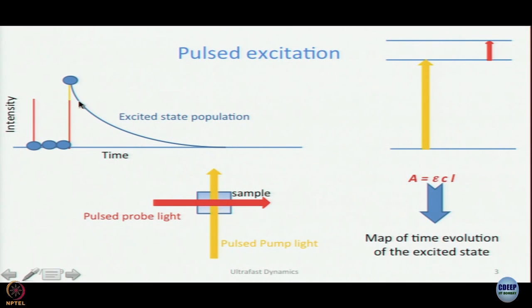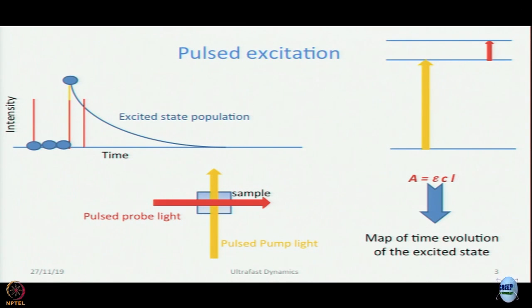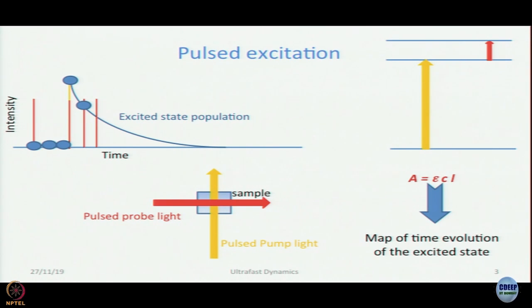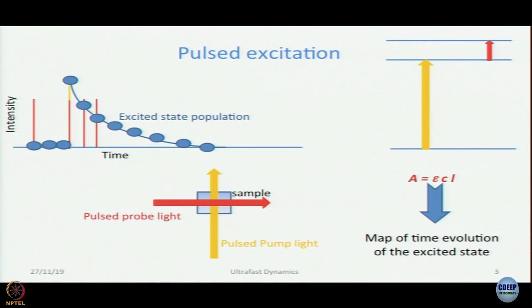As you change the delay between pump and probe pulses, you generate a map of the time evolution of the excited state population — that is how pump probe works. If your probe is tuned to the absorption of the ground state, you get something called ground state bleach. If it is tuned to the absorption of a state formed as a result of an excited state process, you will see a rise-type signal.